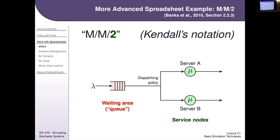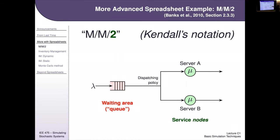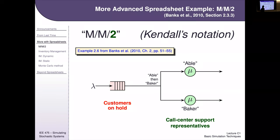We might want to simulate this to ask: is it worth paying for the extra cashier? If both servers show 10% utilization, maybe we didn't need to double the servers. That's something we'd want to study in simulation.